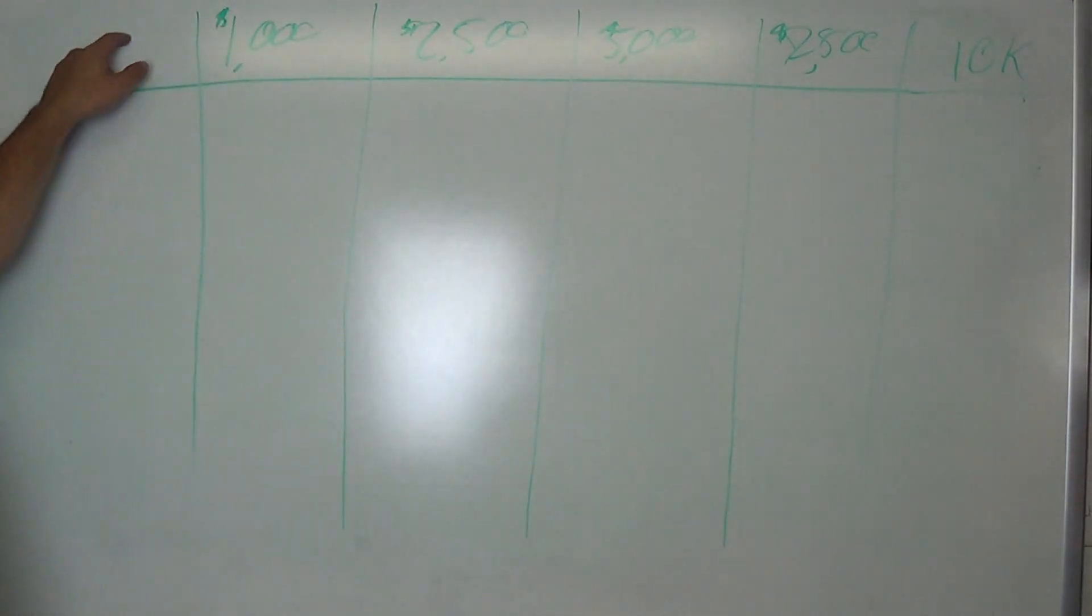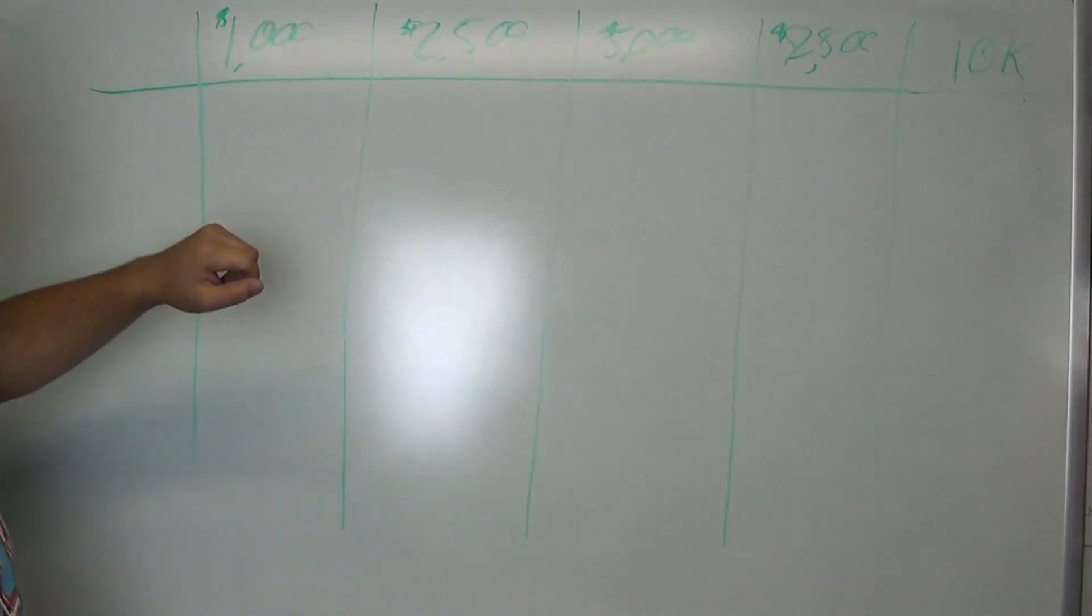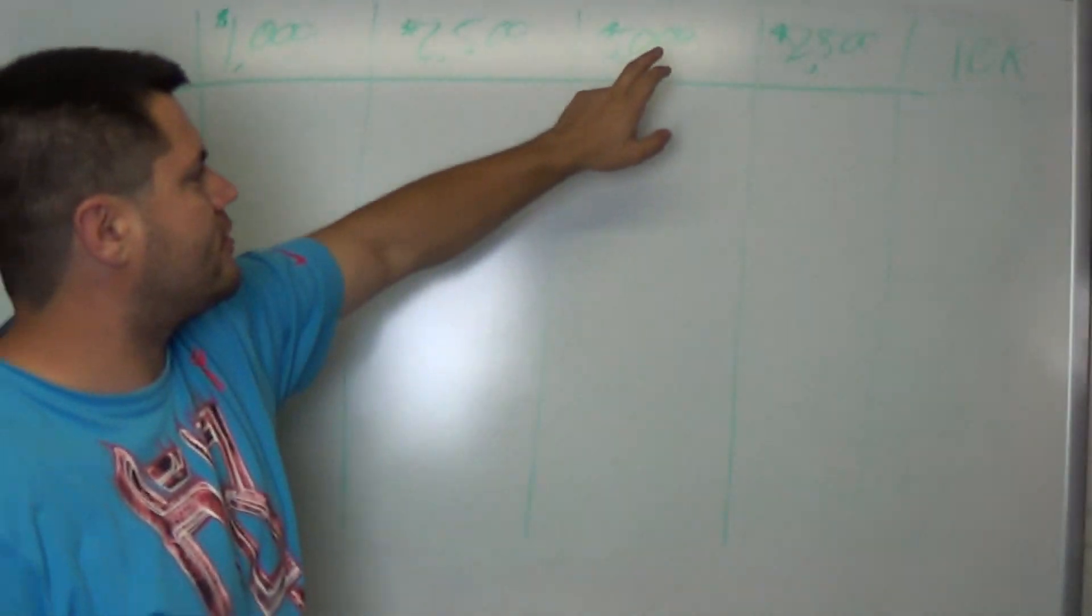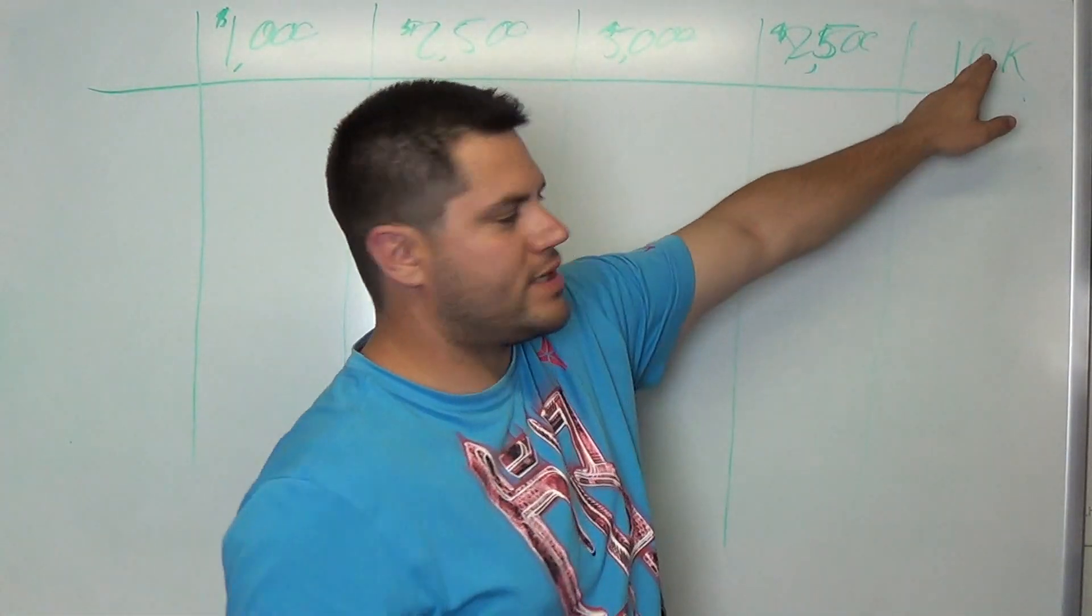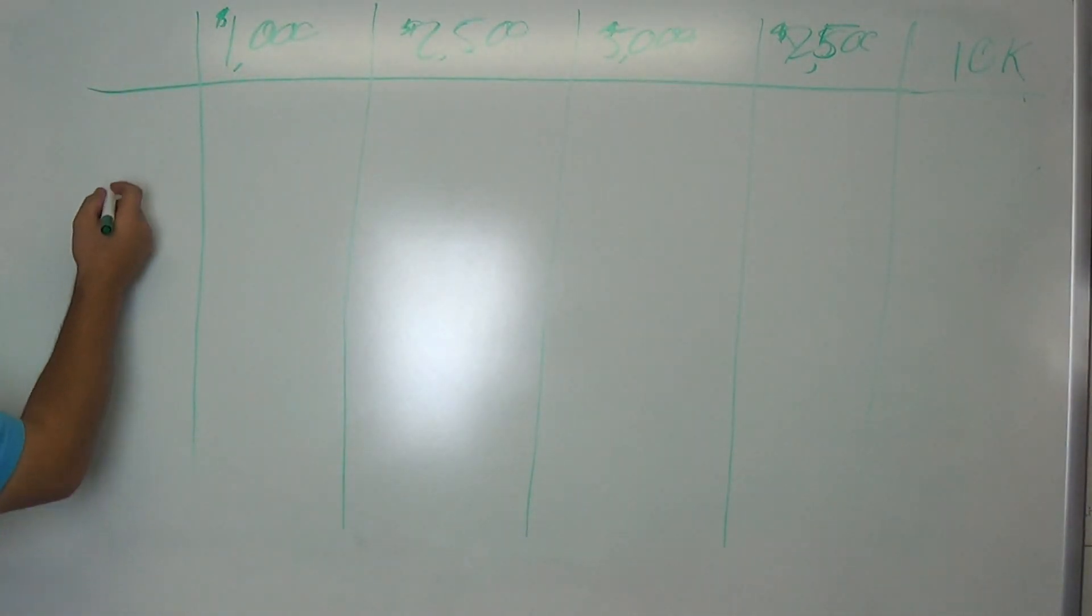So this number up here is the amount of money spent. So $1,000, $2,500, $5,000, $7,500, and $10,000. Right here, in the straight line that I'm doing.